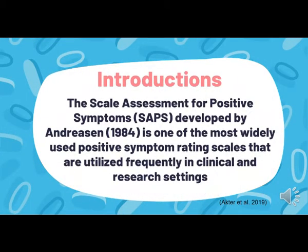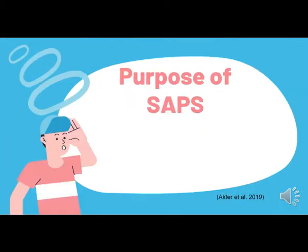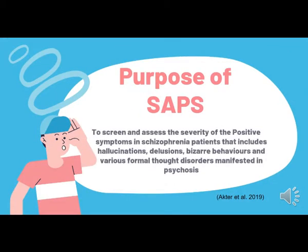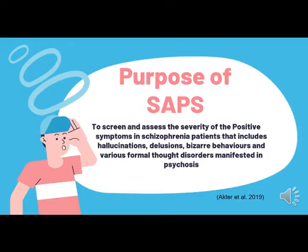The SAPS, Scale Assessment for Positive Symptom, is one of the most widely used positive symptom rating scales utilized frequently in clinical and research settings. The purpose of SAPS is to screen and assess the severity of positive symptoms in schizophrenia patients, including hallucinations, delusions, bizarre behaviour, and various formal thought disorders manifest in psychosis.